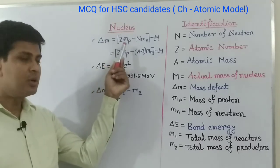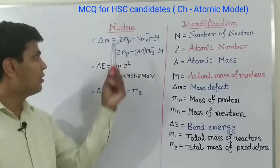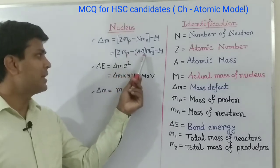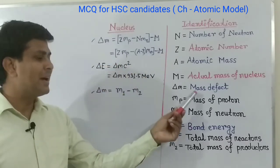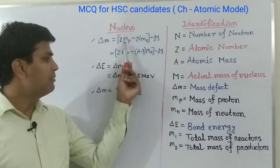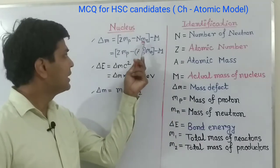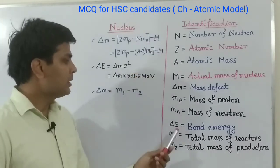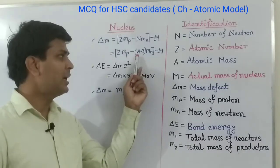Now the formulas related to the nucleus. The first formula for mass defect: delta m equals to Z into m_p plus N into m_n minus M. This can also be written as Z m_p plus (A minus Z) m_n minus M. Here delta m is the mass defect, Z is the atomic number, m_p is the mass of the proton, N is the number of neutrons, m_n is the mass of the neutron, and M is the actual mass of the nucleus.